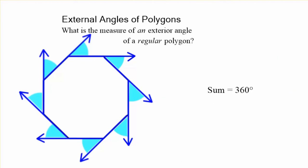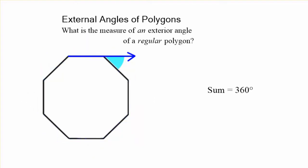But what about the measure of an exterior angle of a regular polygon? Remember, regular polygons have the same angles all the way around, and we just want one of them. Well, you're going to take the sum, 360, and divide by the number of sides. It's that simple. Don't overthink this. It's always going to be 360 degrees divided by how many angles there are.